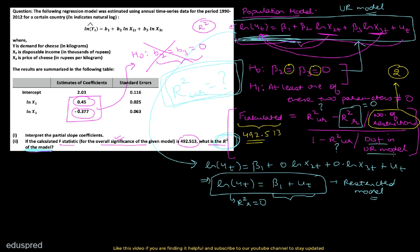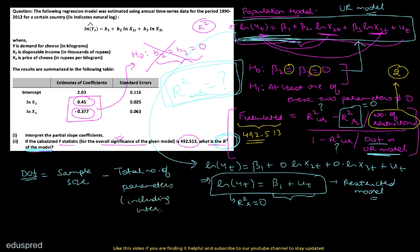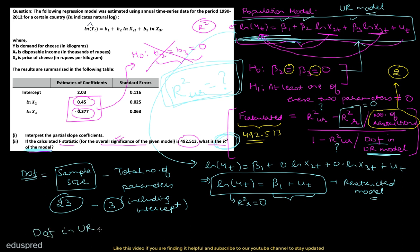Now we need the degrees of freedom in the unrestricted model. Degrees of freedom equals sample size minus the total number of parameters, including the intercept. The sample size is 23, and we have three parameters — beta 1, beta 2, and beta 3 — so degrees of freedom equals 23 minus 3, which equals 20.